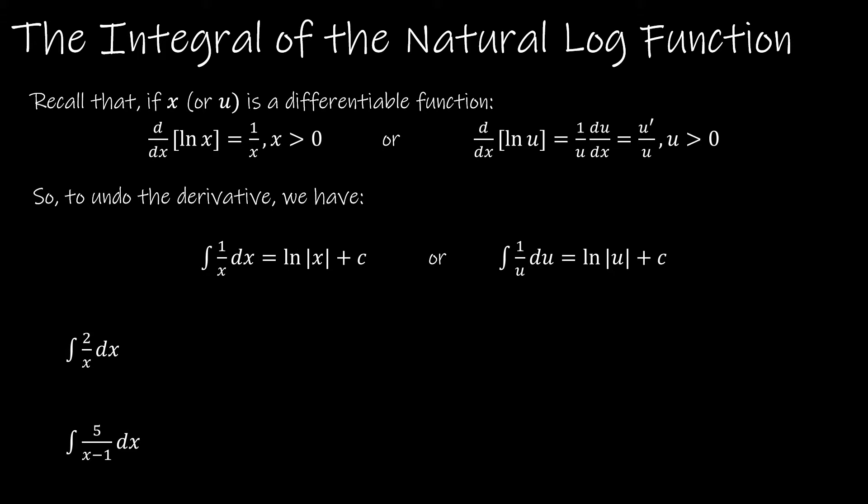If I have 1 over x, that's going to be the natural log of the absolute value of x. And why the absolute value? Because you can only take the natural log of a positive value. If you have a function u, we're going to make sure that it fits that pattern. We're going to make sure that du, which is the same as u prime, is present in the integral before we integrate.